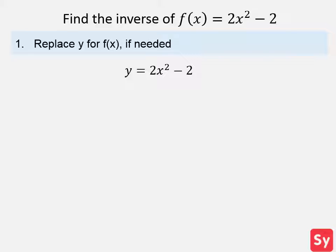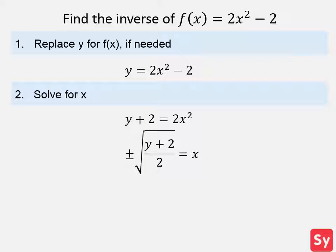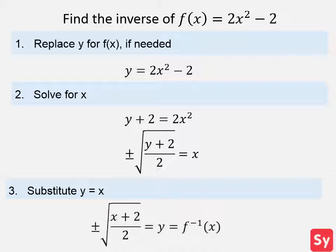Next step, we want to solve for x. So we add 2 to both sides, then we divide each side by 2 and take the square root of each side. Next step, we want to substitute x with y and y with x. So we have y equals plus or minus the square root of x plus 2 over 2, and this is the inverse.